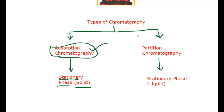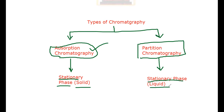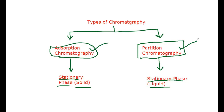The other type is partition chromatography. In partition chromatography, the stationary phase is liquid in nature — liquid adsorbed on a solid surface. In partition chromatography, the solute is distributed between two liquid phases. One liquid phase is the mobile phase and the other liquid phase is the stationary phase.